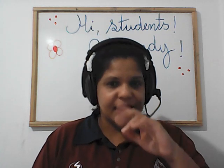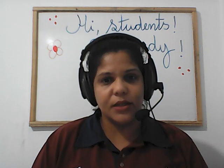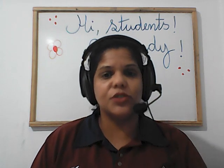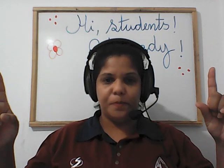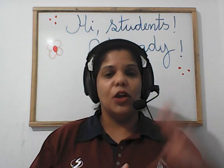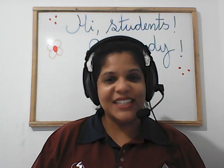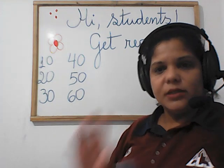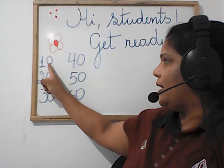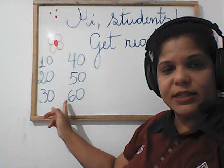Exercise number three — we studied the numbers, remember? We started numbers one to ten, then 20, 30, 40, 50, 60. Let me show you on the board. Take a look — we studied these numbers: 10, 20, 30, 40, 50, 60.